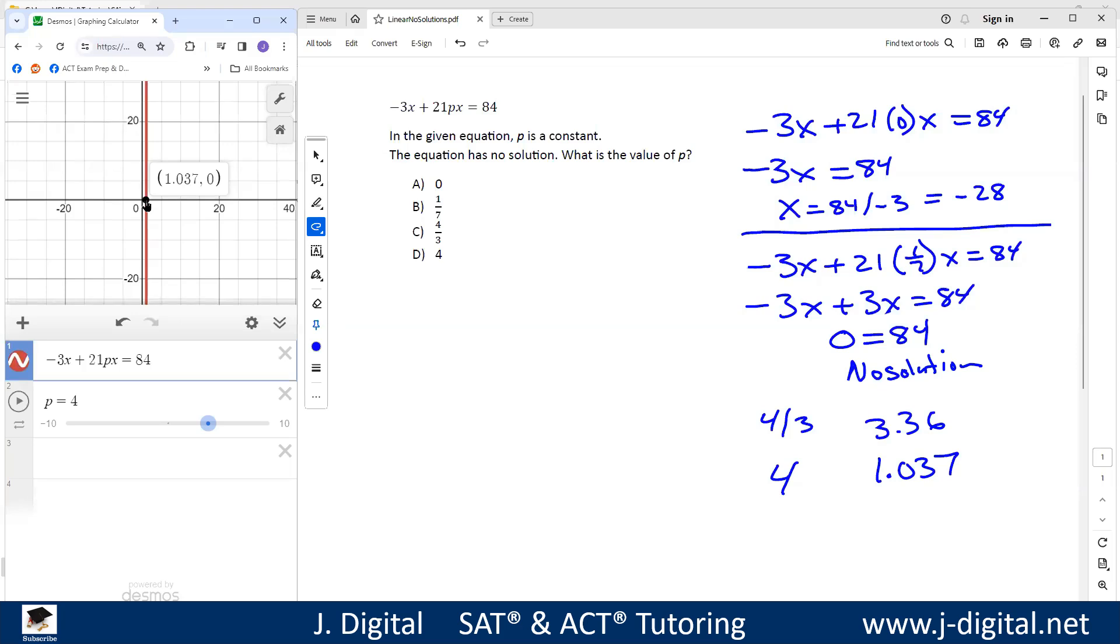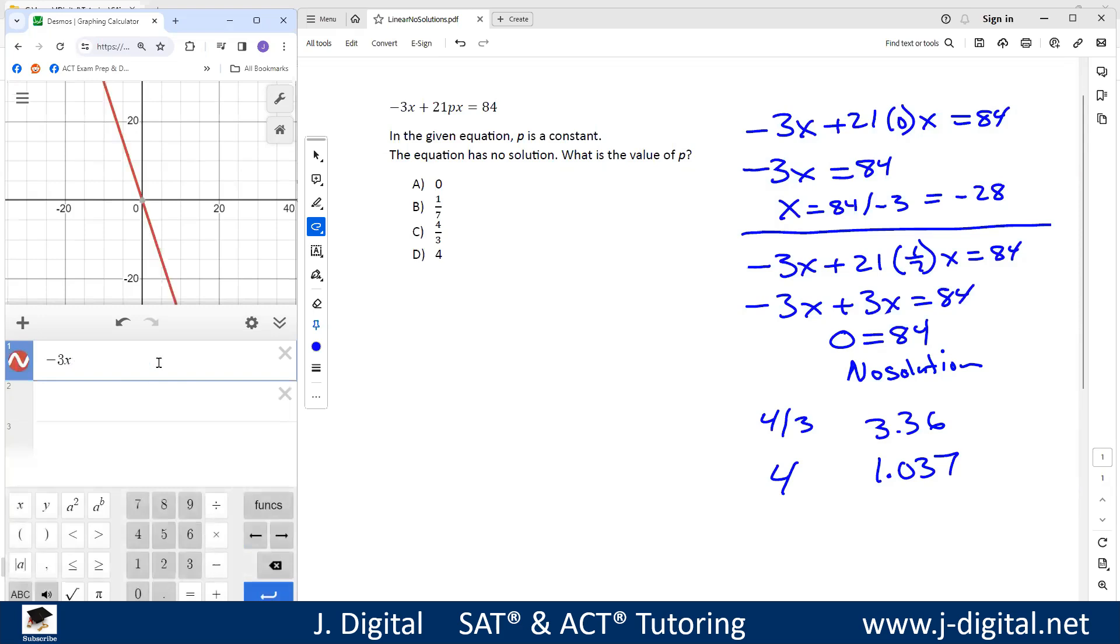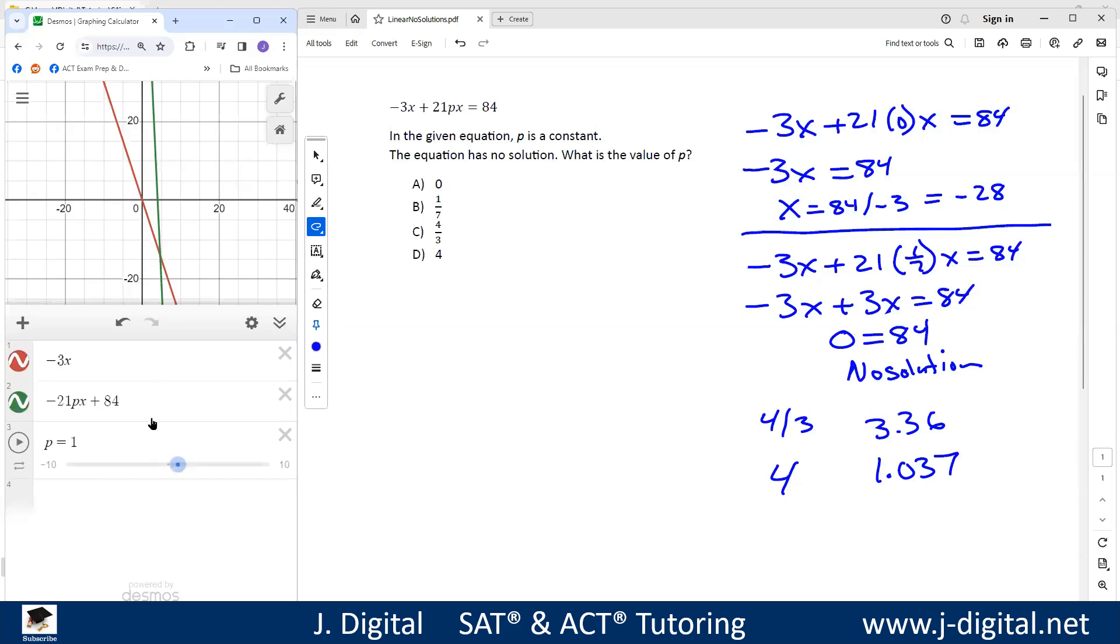Another way to think of this is two lines. If I have -3x as one of the lines, I move the 21px to the other side. That ends up giving me -21px + 84. And again, we have a slider here. So we have this red line, this green line. Right now they meet at this point. So in order to have no solution with two lines, the two lines have to have the same slope but different y-intercepts.